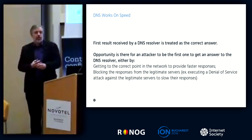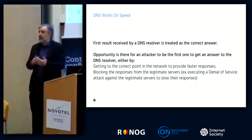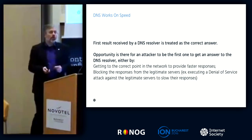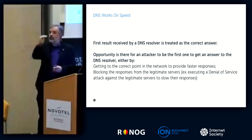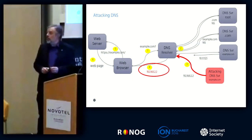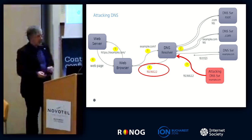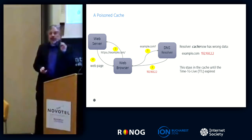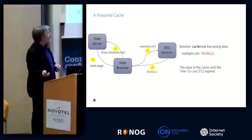DNS works on speed — the first answer that comes back is the one the resolver takes as correct. So if an attacker can get to the right point in a network, they can get their response back quicker to the resolver. The resolver will pass that incorrect information back to the client. The worst part is that the cache in the local resolver now has this incorrect information and will give it out for as long as the record's time to live. It's called a time to live.